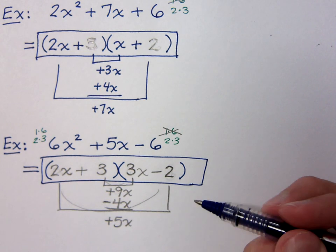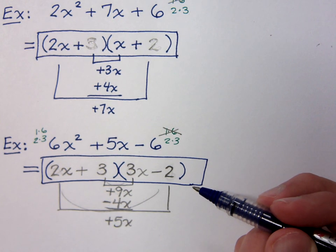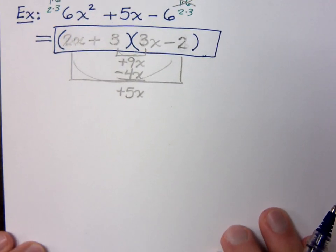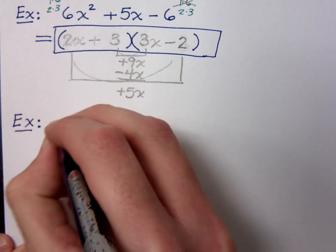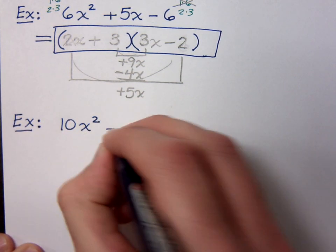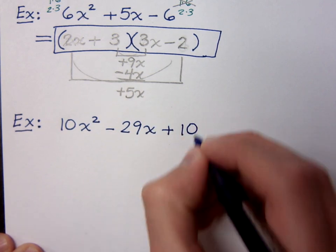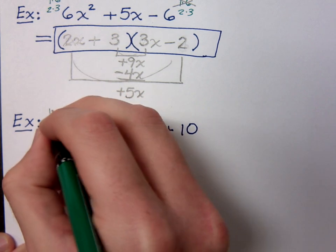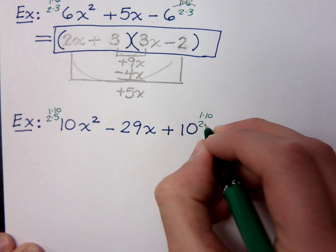So we can easily eliminate certain combinations because of this common factor fail principle. Let's try one last example: 10x squared minus 29x plus 10. Just like in the last problem, we want to list our factors. For 10, we have 1 and 10, and we have 2 and 5 — and the same for the constant: 1 and 10, or 2 and 5.